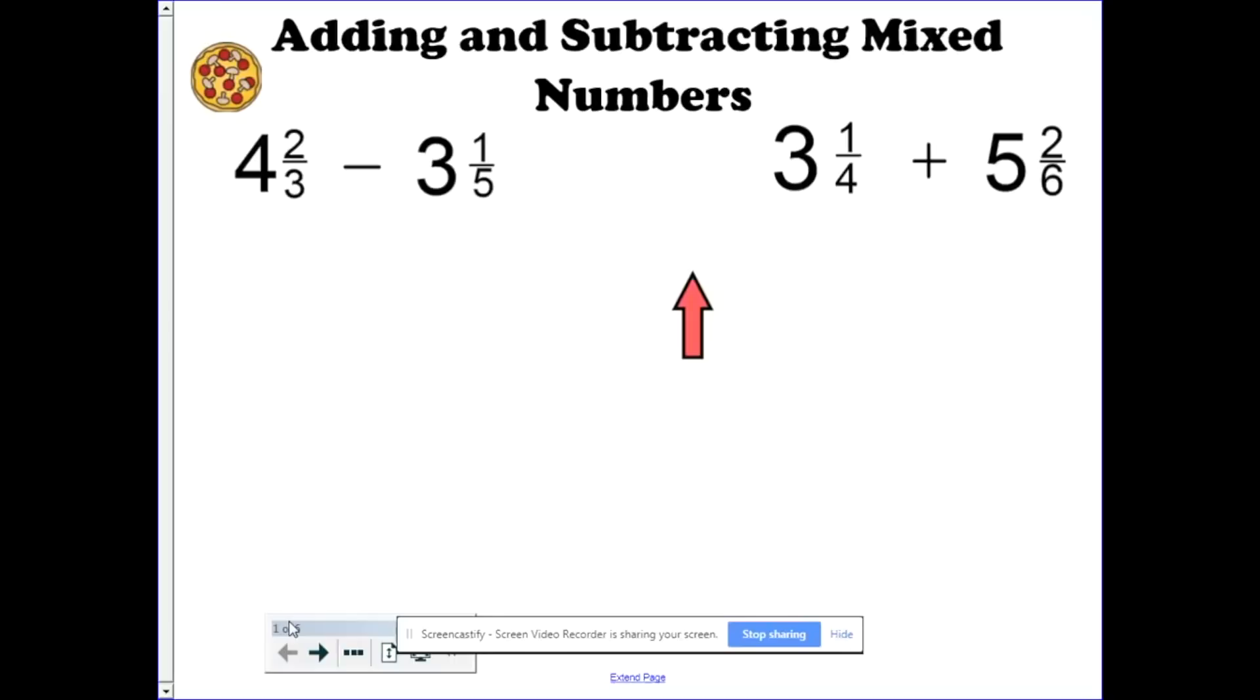Before we get started on how-to, let's talk about what mixed numbers are. Mixed numbers are just what they sound like. They are a mixture of whole numbers and parts of wholes, in this case fractions. Just like in decimals, we have our whole numbers and our decimals are parts of wholes. In fractions, we have whole numbers and fractions.